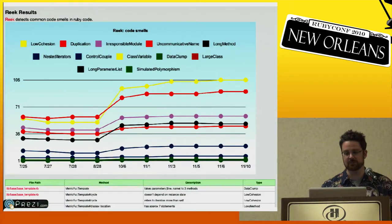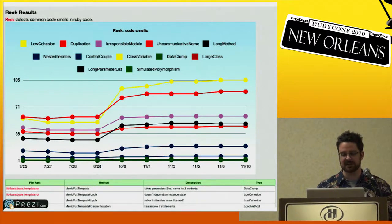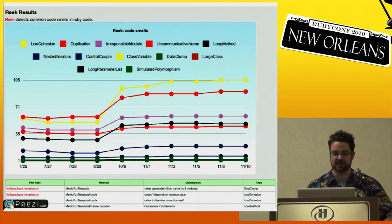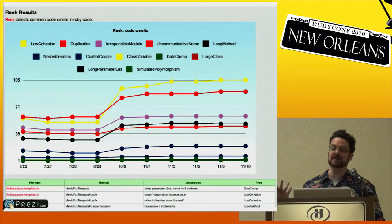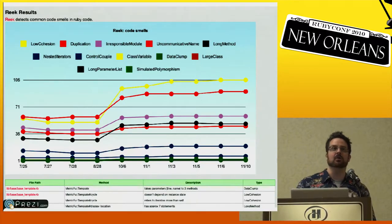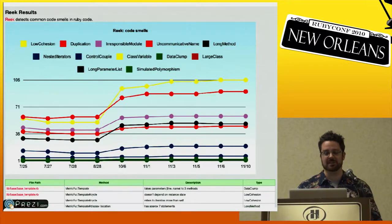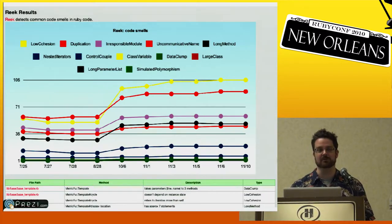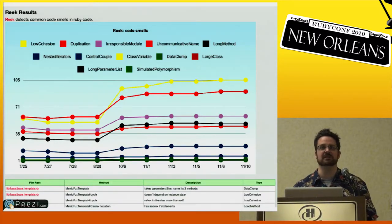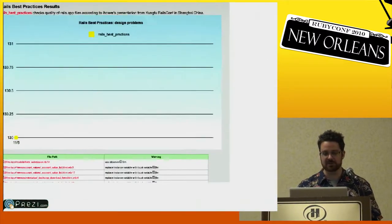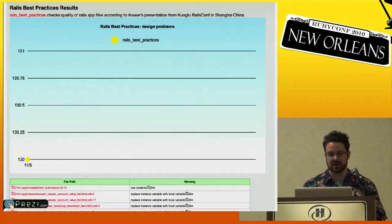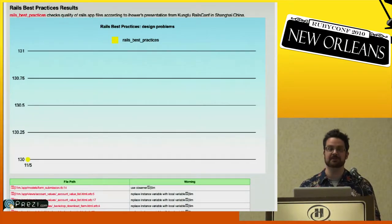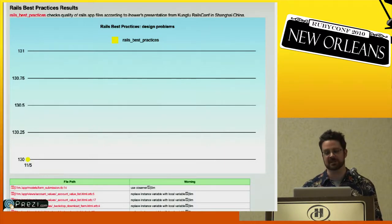Reek is one of many code smell detectors. It discovers things like uncommunicative names, long methods, or other problems that tend to lead to badness, and we track those. Rails best practices is a code smell detector specifically focused on Rails — we don't run that if we're not in a Rails project, but if you are, it'll tell you certain things about your Rails project that you probably shouldn't be doing.